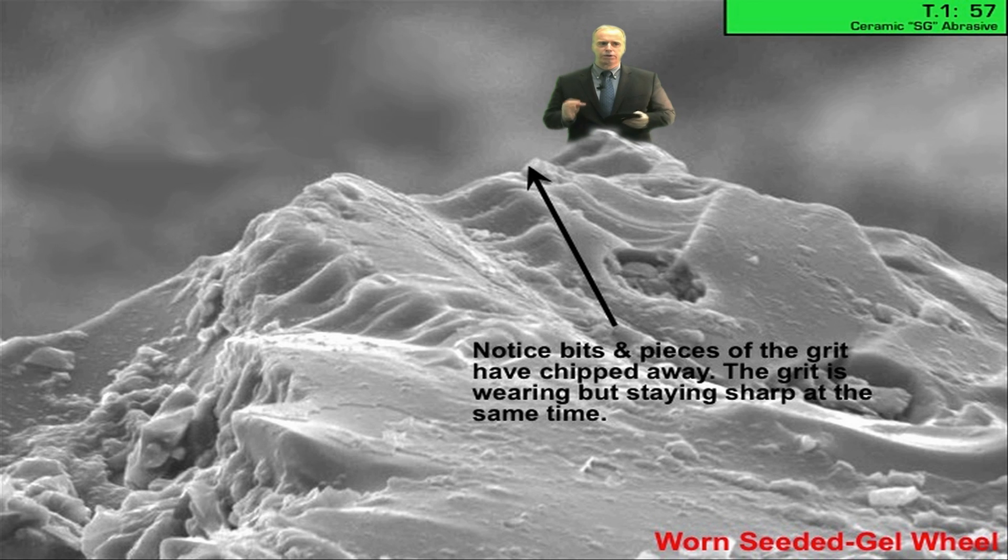So instead of one grit having maybe three or four crystals, that one grit has billions and billions of crystals. But because of that, the billions and billions of crystals, the fine microstructure makes it really tough.